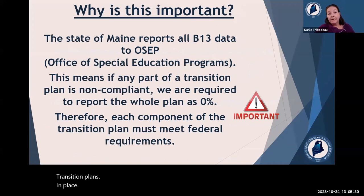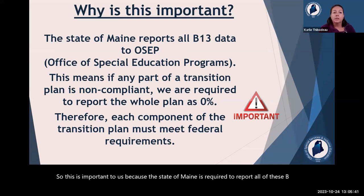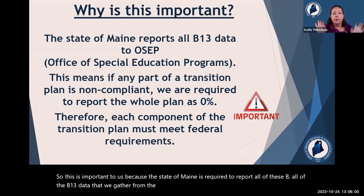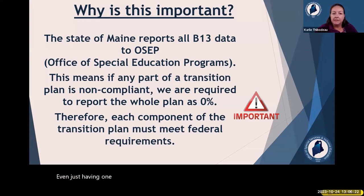This is important to us because the state of Maine is required to report all B13 data gathered from the SAUs across the state to OSEP — the Office of Special Education Programs, which is the federal DOE. We look at several pieces of the transition plan, and if any one of those pieces is noncompliant, we have to report the whole plan as 0%. So it's either 0% or 100% as reported to OSEP. Even just having one piece out of compliance means we report that as 0%.